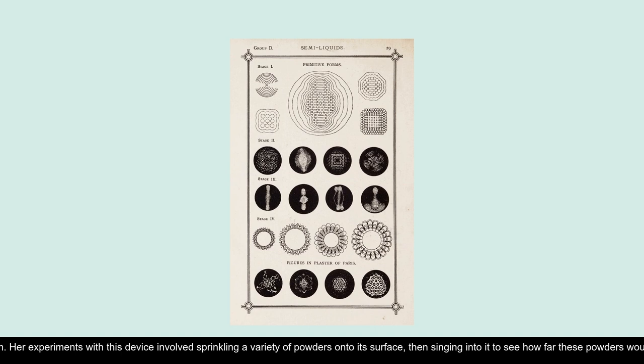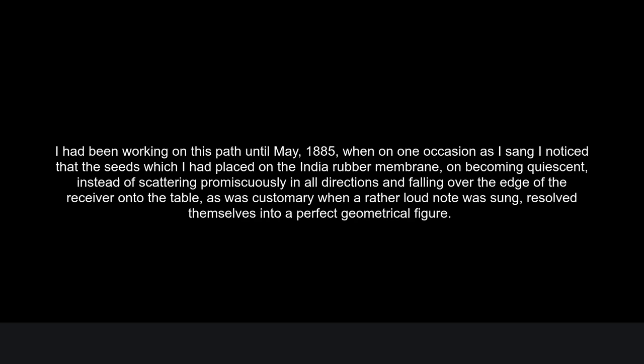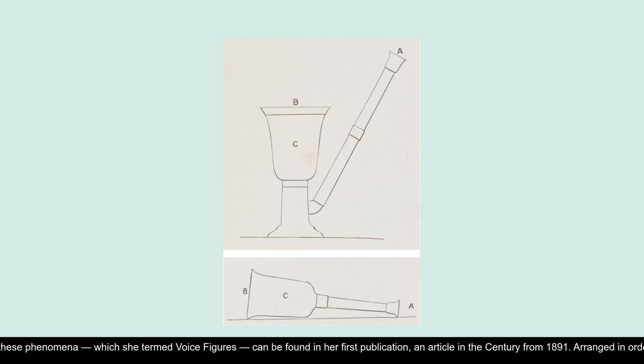This activity would soon take an unexpected turn. 'I had been working on this path until May 1885, when on one occasion as I sang, I noticed that the seeds which I had placed on the india-rubber membrane, on becoming quiescent, instead of scattering promiscuously in all directions and falling over the edge of the receiver onto the table as was customary when a rather loud note was sung, resolved themselves into a perfect geometrical figure.' Illustrations of these phenomena, which she termed 'voice figures,' can be found in her first publication, an article in the Century from 1891.